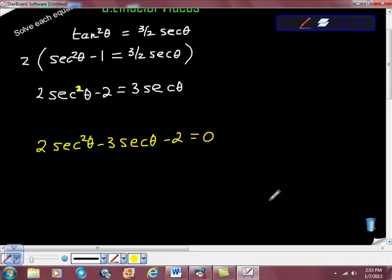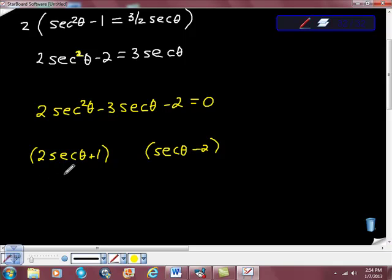From here, I start to do this same bit of work. It helps that 2 is prime. So I know we're going to get 2 secant theta here, and we're going to get secant theta here. We know that one of our terms is going to be positive and 1 is going to be negative because we have a negative here. And I think I did my work and I got positive 1 here and negative 2 here. That's what I think I got here.